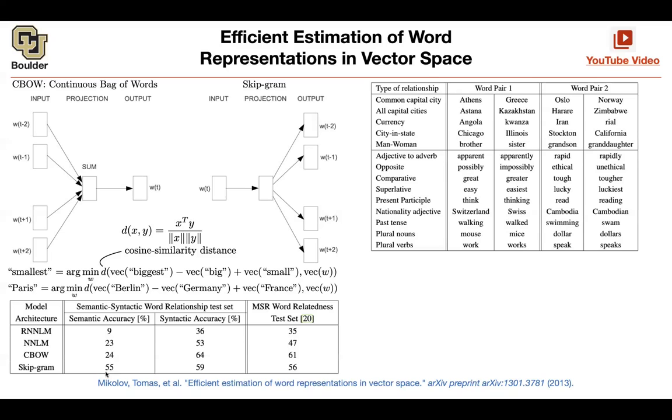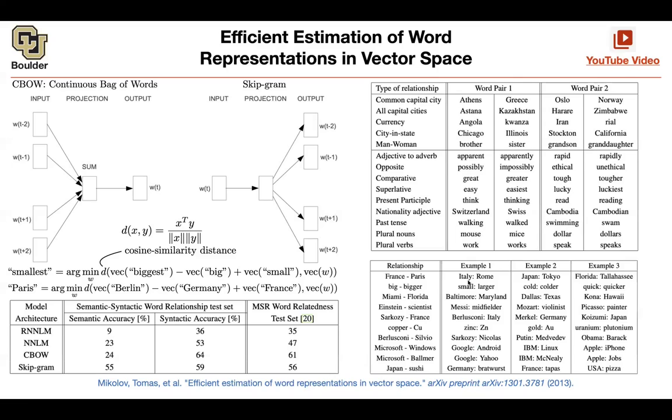And then these are actually what's coming out of the algorithm: France, Paris, Italy, Rome, Japan, Tokyo, etc. Any questions about continuous bag of words?